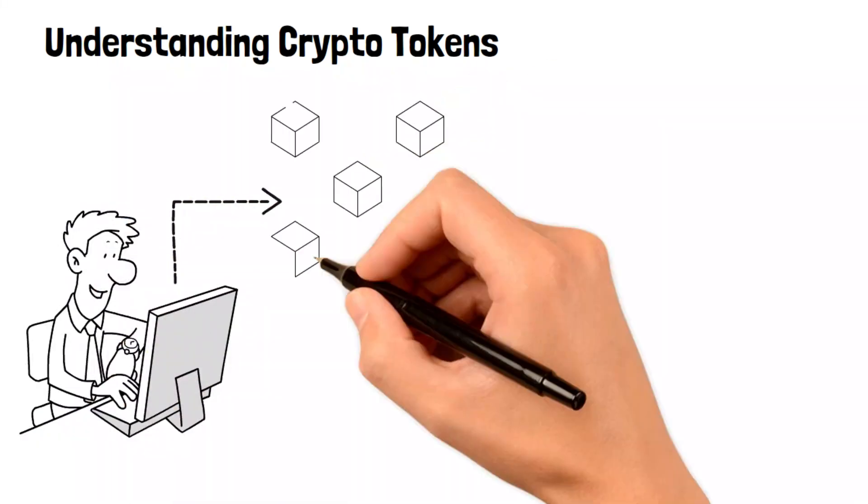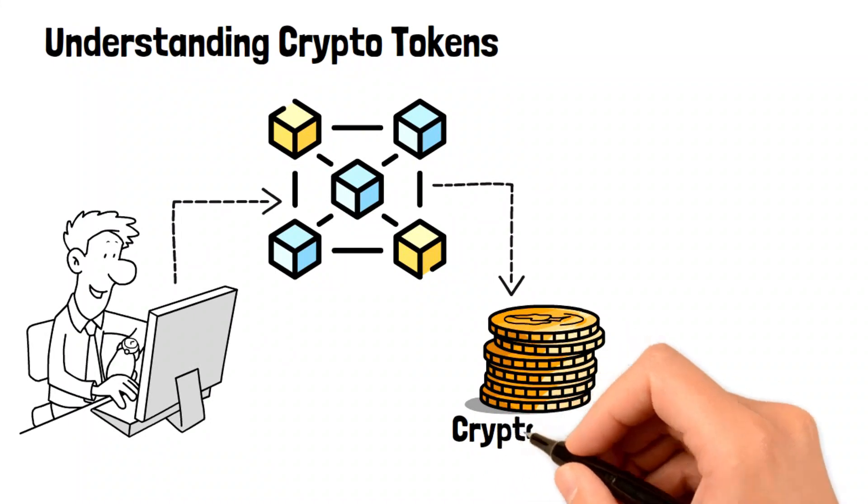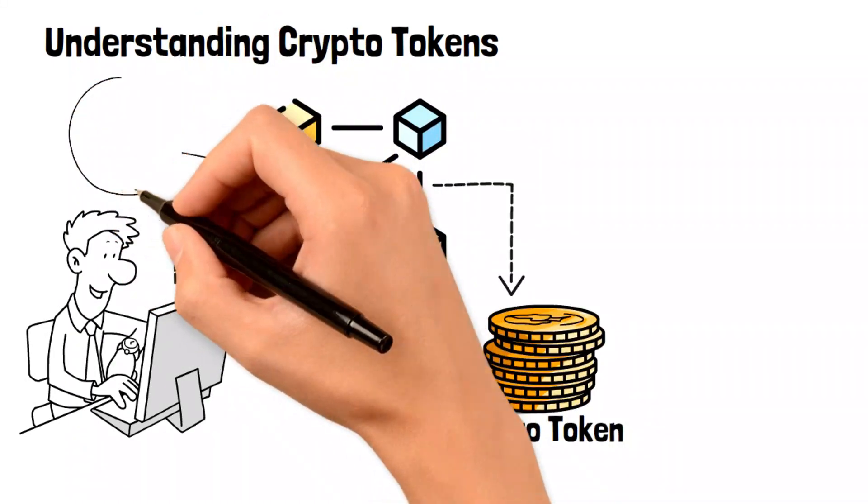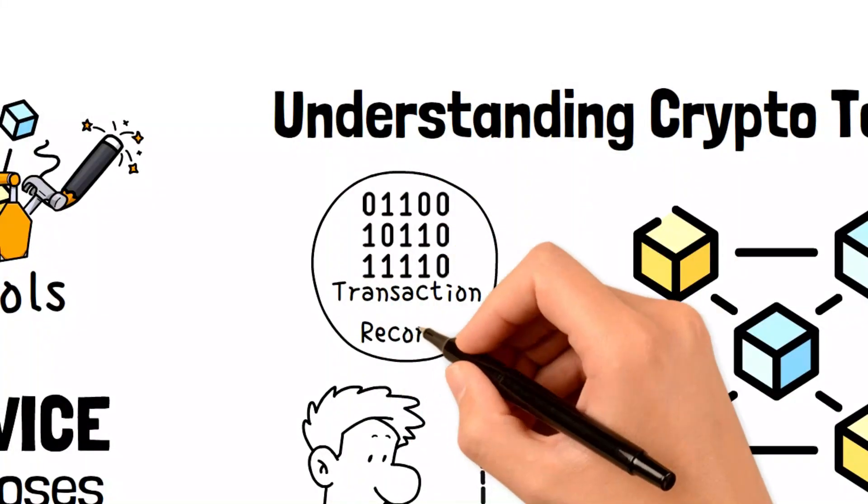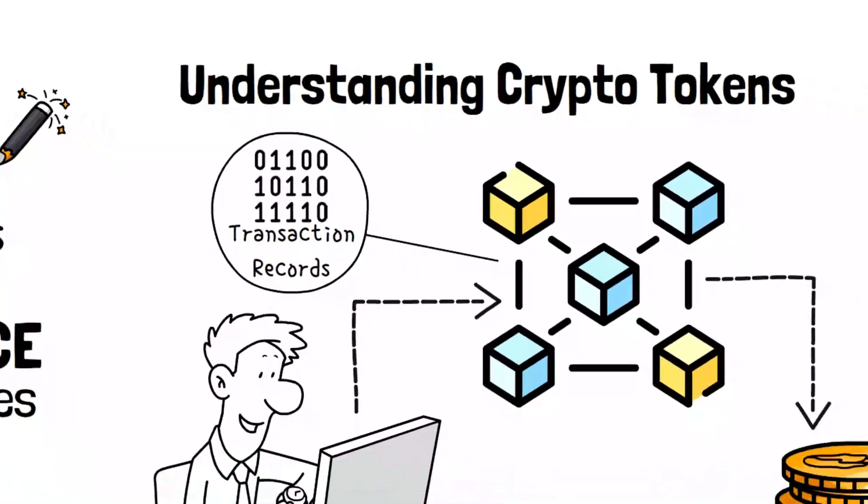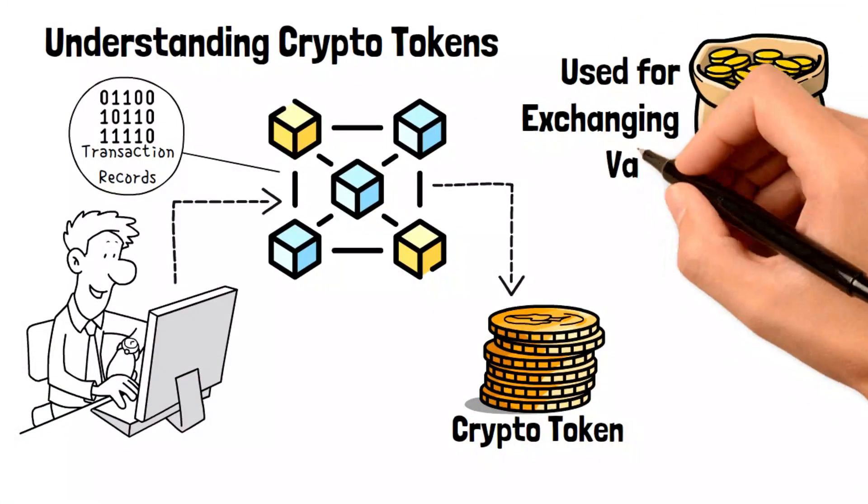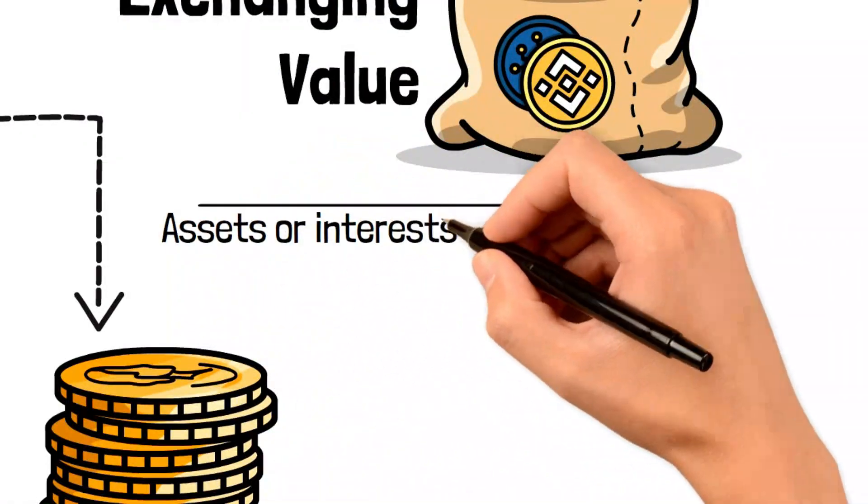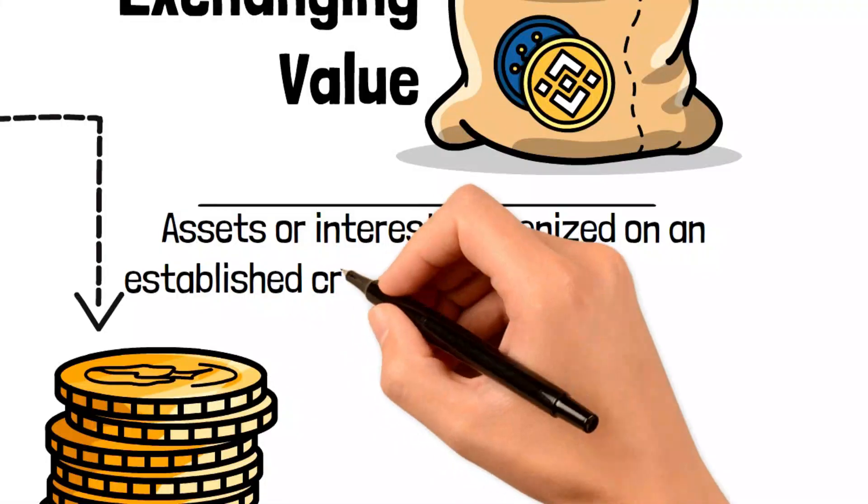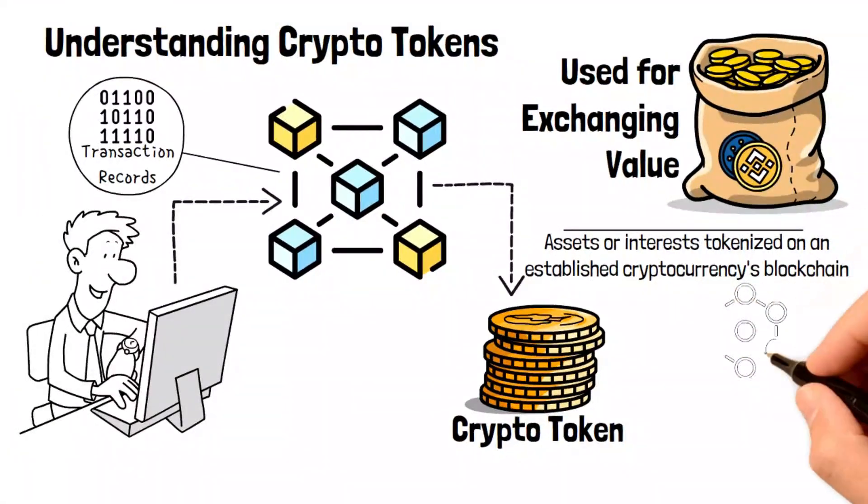Understanding crypto tokens: Crypto tokens are digital assets created on the blockchain of an existing cryptocurrency. The blockchain acts as a digital ledger storing information in interconnected blocks, which can hold transaction records or execute smart contracts. Unlike cryptocurrencies primarily used for exchanging value, crypto tokens represent assets or interests tokenized on an established cryptocurrency blockchain.